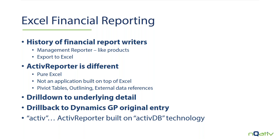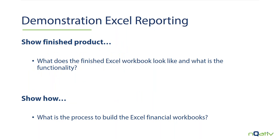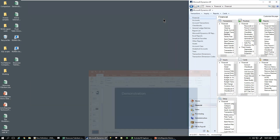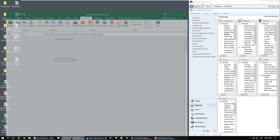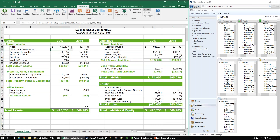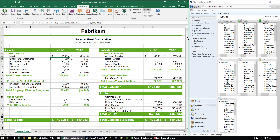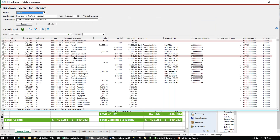The word 'active' in Active Reporter really means something because we're built on active database technology. In demonstrating the product, I like to bring up the finished product first. We're going to look at a finished Excel spreadsheet, and then show you how easy it is to produce that Excel financial workbook. So we'll put away the PowerPoint and go into the presentation. Here's a typical balance sheet for the company Fabricam. The essence of Active Reporter is that we can highlight any number on this spreadsheet and drill down to the underlying data.